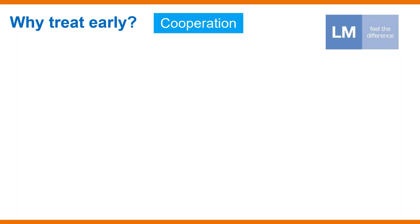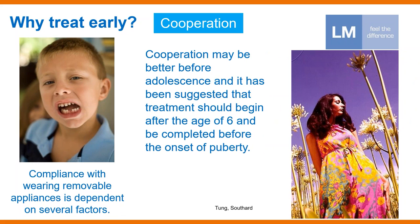Normally we say that cooperation is very complex to manage because we largely treat young children, and particularly during puberty this is very complicated. But if we read the literature, we can see that if we want to treat with removable appliances, one of the best periods to use cooperation is exactly early mixed dentition, because in this period we can use the appliance perhaps during the night. This means that we need only a short cooperation, particularly in the beginning of the treatment.